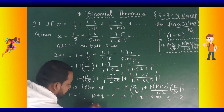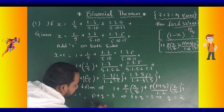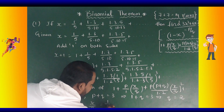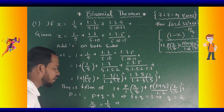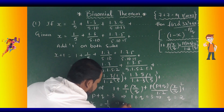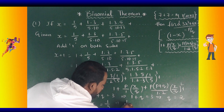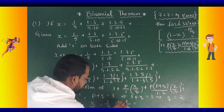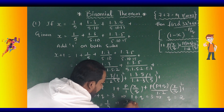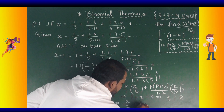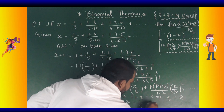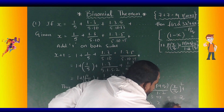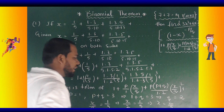Next, x by q equals 1 by 5. We know the value of q is 2. So in place of q, we write x by 2 equals 1 by 5, which gives x equals 2 by 5.